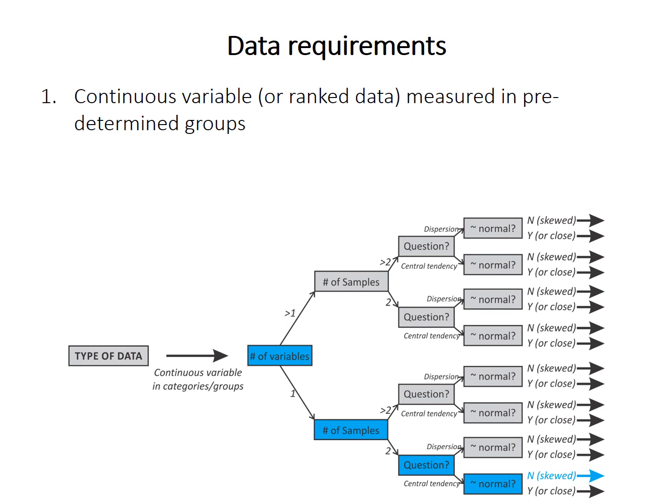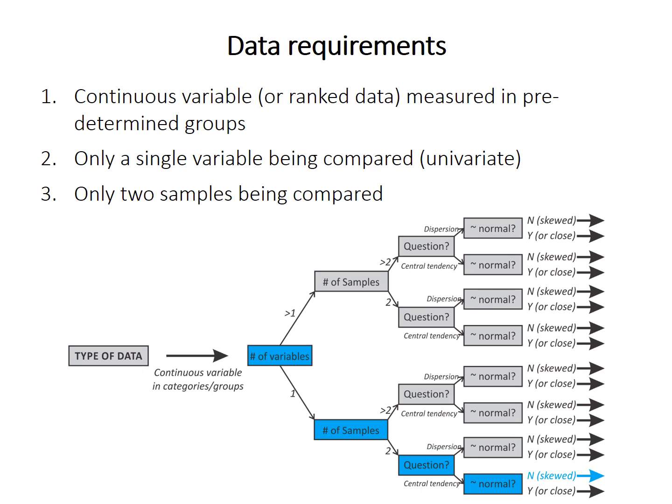Even though the test does not require that your data are normally distributed, it does require continuous data measured in predetermined groups. Because the test converts the data to ranks, you can also use rank data if you have it. You must be working with univariate data grouped into only two samples, and your question must involve central tendency — not dispersion.